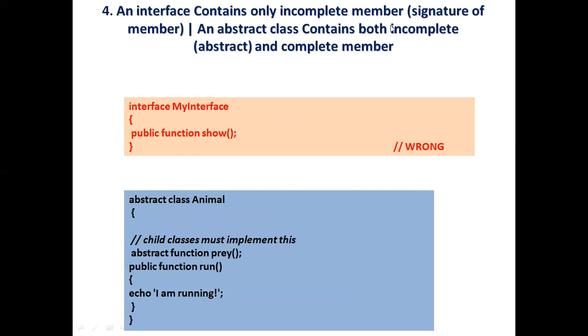Fourth point: interface contains only incomplete members, meaning signature of members, while abstract class contains both incomplete abstract as well as non-abstract functions. So inside interface, you only declare the functions and end it with a semicolon. You do not define what it will do. While in abstract class, you can also make a normal abstract function where you do not define the body.